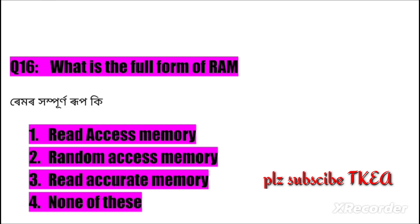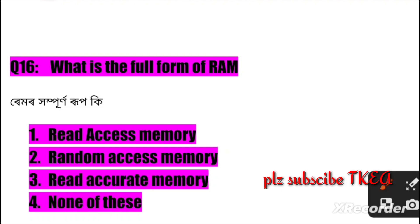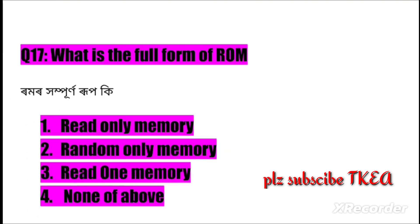Question number sixteen: What is the full form of RAM? Option one: Read Access Memory, two: Random Access Memory, three: Read Accurate Memory, four: none of these. The right answer is number two: Random Access Memory.